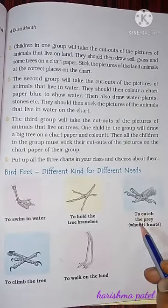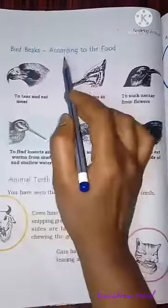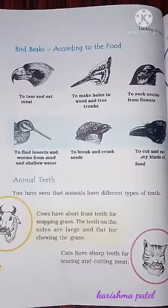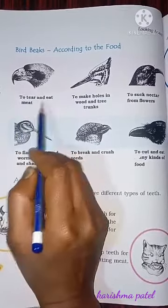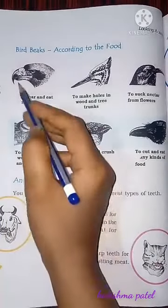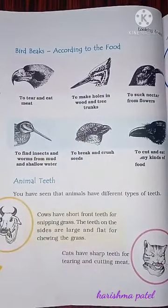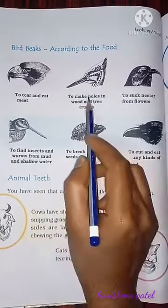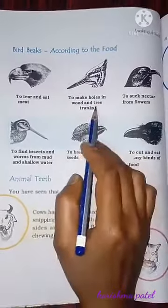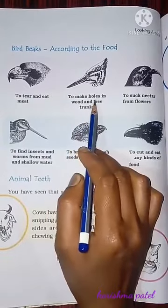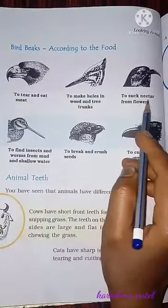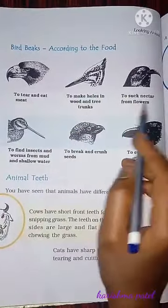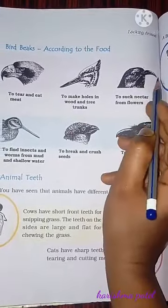Now we look at bird beaks. Different birds have different beaks. First, to tear and eat meat — this type of sharp, curved beak is for eating meat, like the eagle's beak. Next, to make holes in wood and tree trunks — useful for the woodpecker and barbet. And next, to suck nectar from flowers — a long, thin, pointed beak is useful for this.